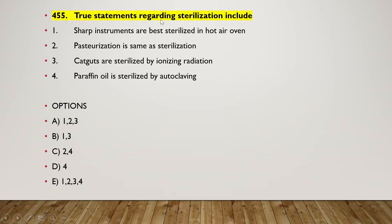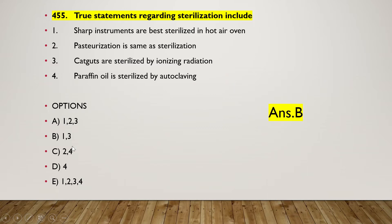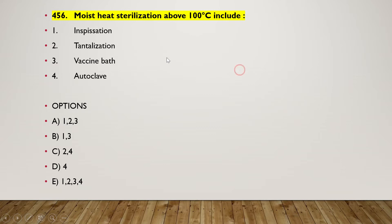The next question: true statements regarding sterilization include — sharp instruments are best sterilized in hot air oven, pasteurization is the same as sterilization, catgut is sterilized by ionizing radiation, or paraffin oil is sterilized by autoclave. The right answer is option B — one and three — about sterilization.